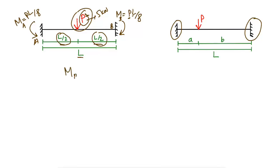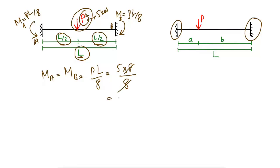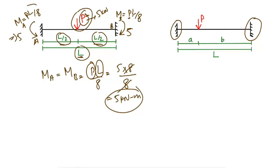The moment at B and at A are both the same because the load is acting symmetrically. So PL/8: put P as 5 kN, multiply with the total length of the beam — not the half length — for example 8 meters, then divide by 8. The 8s cancel and we get 5 kN·m. So the bending moment at each end is 5 kN·m.